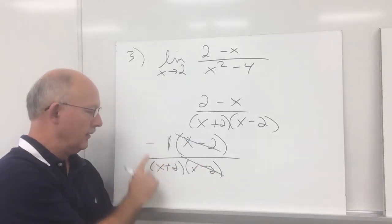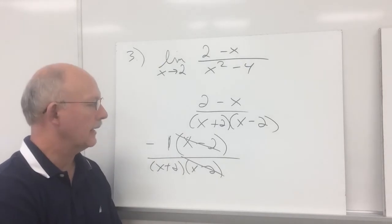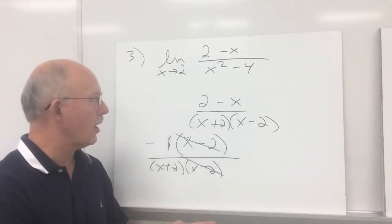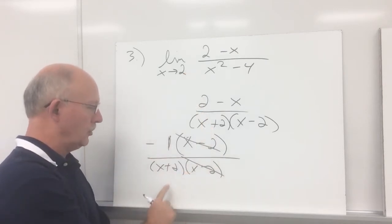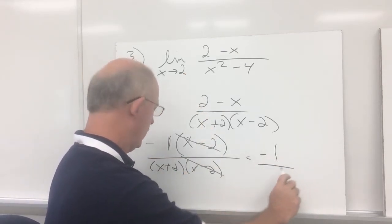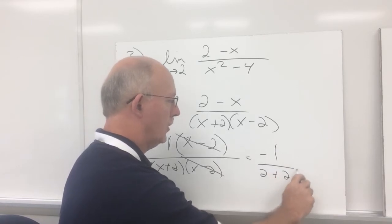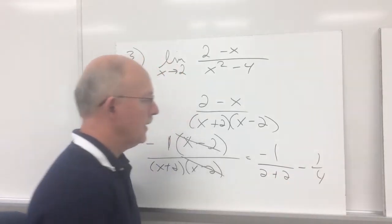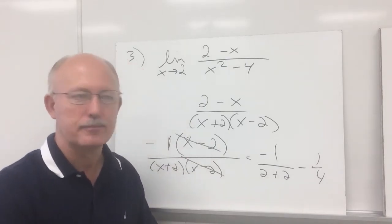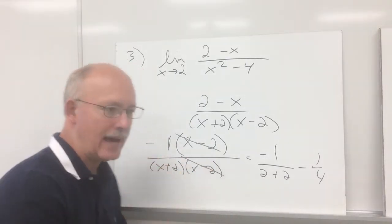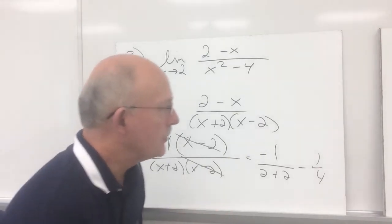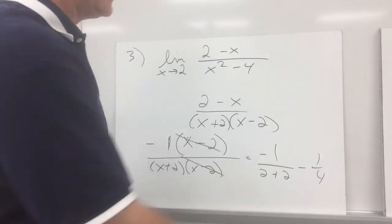The x minus twos cancel out, leaving negative one over x plus two. Once the hole is factored out and canceled, we substitute two in for x: negative one over two plus two gives us negative one fourth. So the limit as x approaches two is negative one fourth. To evaluate this type of limit, you've got to be able to factor.